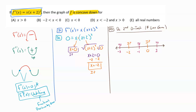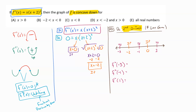This is the second derivative test, so we test all values in the second derivative. For f double prime of negative three: we plug in negative three to get negative three times (negative three plus two) squared. That gives negative three times negative one squared, which equals negative three. We only care whether it's positive or negative — this is negative, so this region is concave down like a frown.